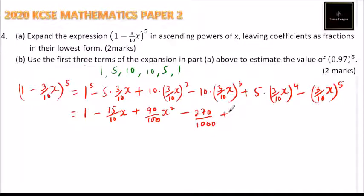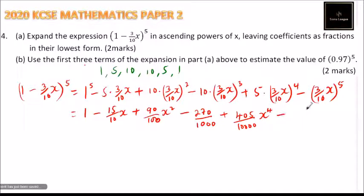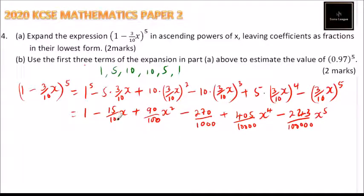Then we have plus: 3 to the power of 4 is 81, multiplied by 5 gives 405, over 10 to the power of 4 which is 10,000 — so 405 over 10,000 x to the power of 4. And finally minus: 3 to the power of 5 is 243, divided by 10 to the power of 5 which is 100,000. So x is in ascending order: x, x squared, x cubed, x to the power of 4.